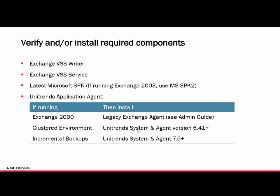Verifying required components: there is a VSS Writer for Exchange and the VSS Writer service — both have to be running and in automatic mode. Make sure you have the latest Microsoft Service Pack; if you're running Exchange 2003, use Service Pack 2. For Exchange 2000, there's a legacy agent — check the admin guide for more details. If you're running a clustered environment, make sure the Unitrends system and agent versions are both 6.4 or greater. For incremental backups against Exchange databases, there is no incremental forever — you still have to run weekly fulls, and your system must be running version 7.5 or greater.